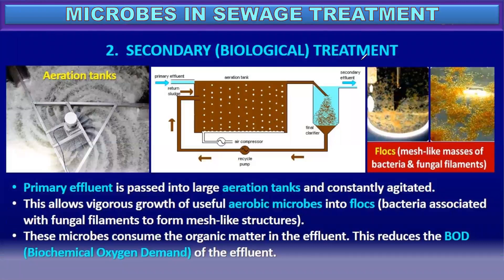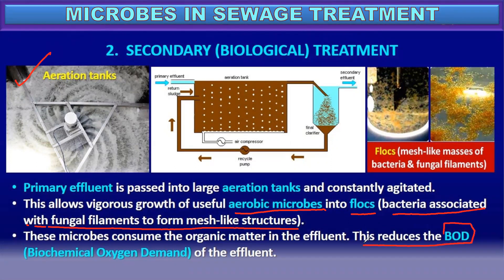The primary effluent is passed to secondary treatment, where a large aeration tank is constantly agitated. This allows vigorous growth of useful aerobic microorganisms in the effluent, forming flocs. Bacteria associate with fungal filaments to form mesh-like structures. These microbes consume the organic matter present in the effluent, which reduces the BOD — the biological oxygen demand. Greater the BOD, more is the polluting potential of the effluent.